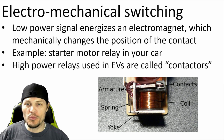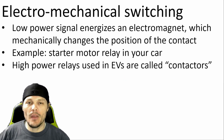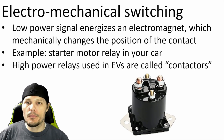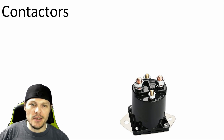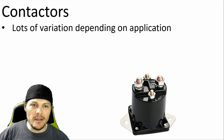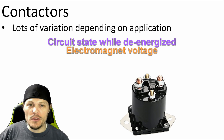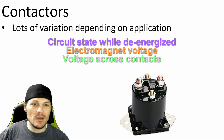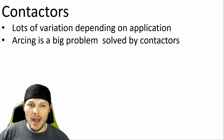Low power electromechanical switches are called relays, and high power electromechanical switches are called contactors. You'll also sometimes hear either of these called solenoids. Contactor design ratings can vary widely depending on the application — for example, normally closed versus normally open, coil voltage, switching voltage, contact amperage, etc.